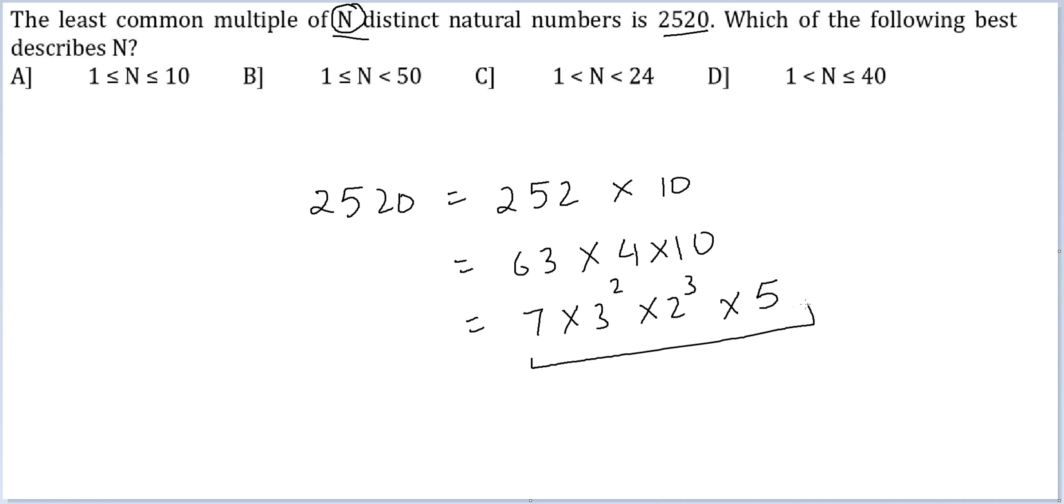Let me find out the total number of factors of this. So I will get 2 into 3 into 4 into 2. So I get 48. Therefore the maximum possible value of n is 48. The minimum possible value is of course 1. So which of the following best describes n? The option b would be sufficient.